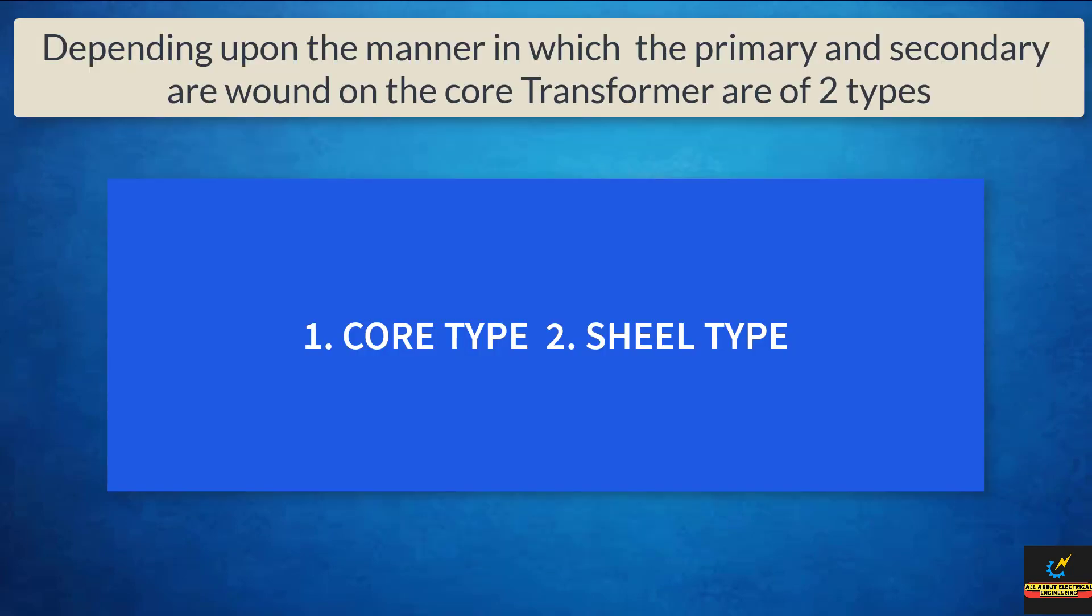Now, depending upon the manner in which the primary and secondary are wound on the core, transformers are of two types. First, core type transformer. Second, shell type transformer.